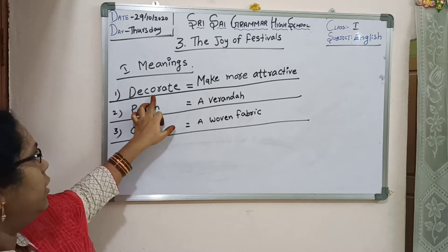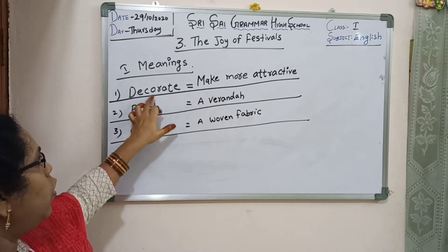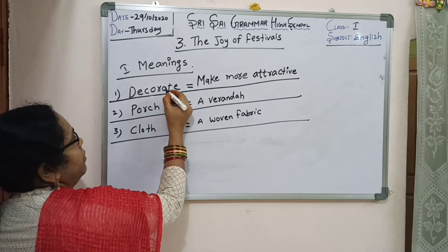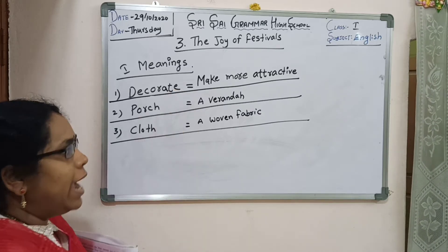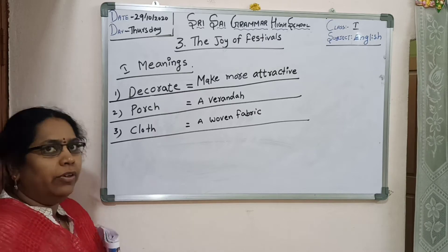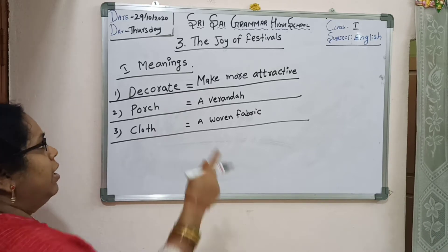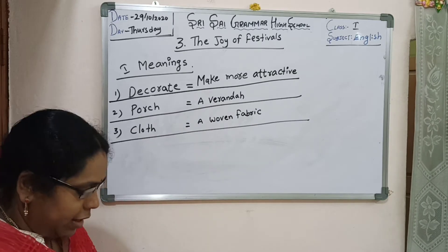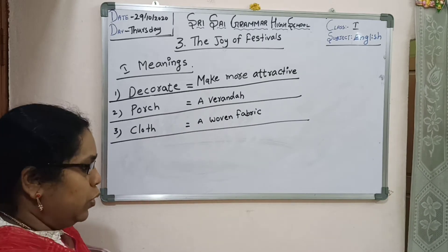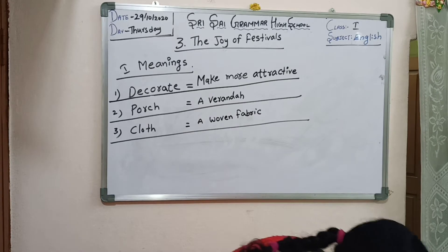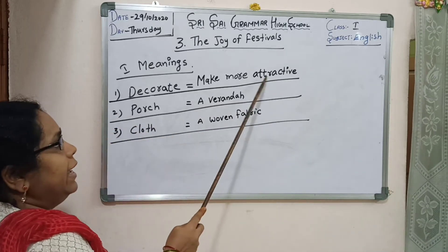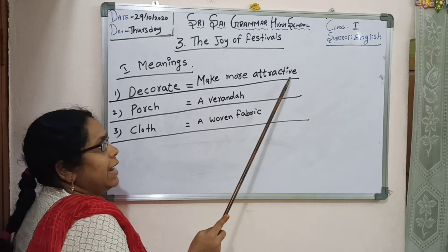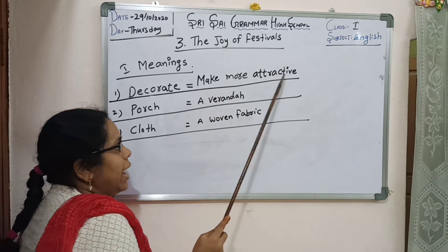First word: decorate. D-E-C-O-R-A-T-E. Decorate means make more attractive, make more beautiful, adding something. Make more attractive. M-A-K-E, M-O-R-E, A-T-T-R-A-C-T-I-V-E. Make more attractive.